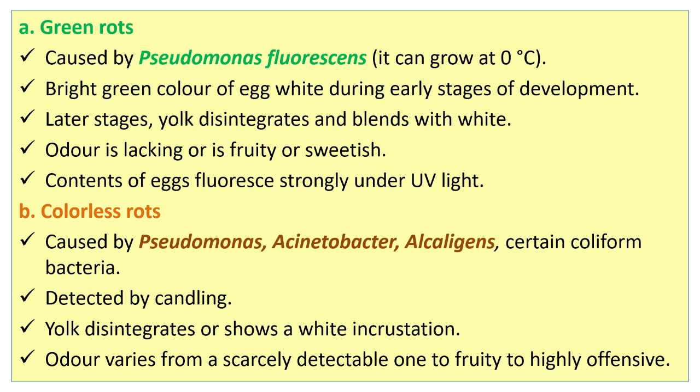Pseudomonas fluorescens can grow at zero degrees Celsius. It causes a bright green color of egg white during early stages of development. In later stages, yolk disintegrates and blends with white, and odor is lacking or is fruity or sweetish. Contents of egg fluoresce strongly under UV light.